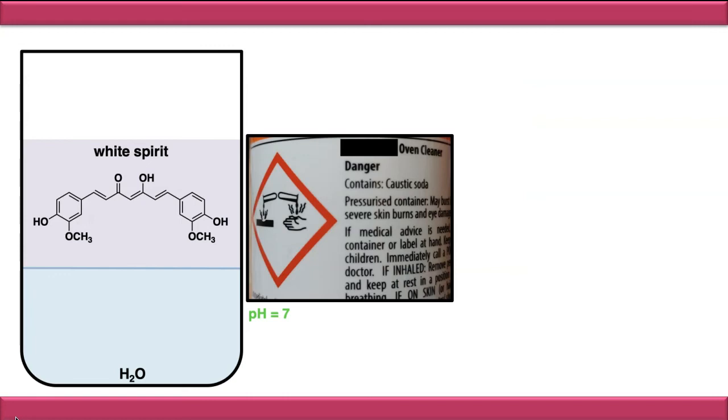Now, if we take household oven cleaner, and you can see here it contains this ingredient, caustic soda, which is an old name for sodium hydroxide, and sodium hydroxide is a base. If we add this oven cleaner to the mixture, then we're going to change the pH of the water phase, and that will allow us to manipulate where this curcumin ends up. So if we add our sodium hydroxide to our water phase, we're going to increase the pH from 7 up to 14, and that's going to deprotonate this curcumin molecule and make it charged.